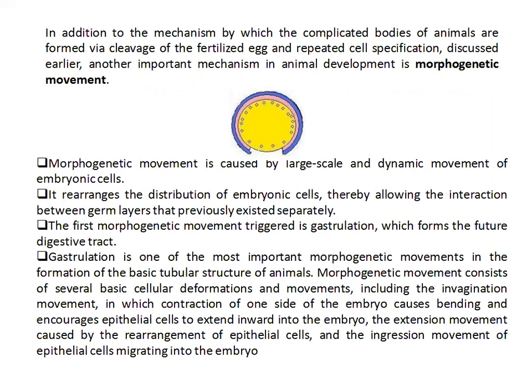Morphogenetic movements need a specific entry point. As in the case of amphibians, we have the blastopore. As in the case of birds, we have the primitive streak. A specific zone must be present for proper morphogenetic movements of those previously destined cells.